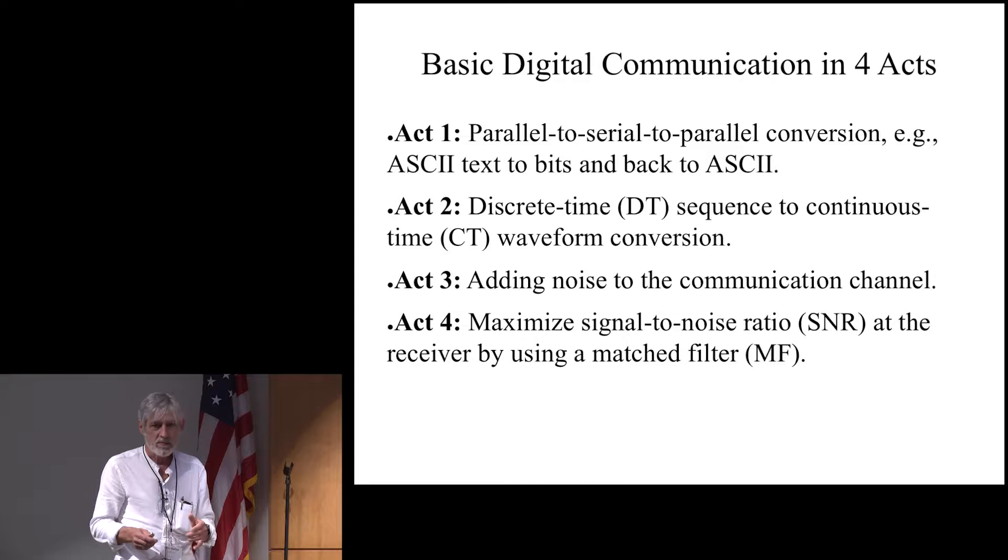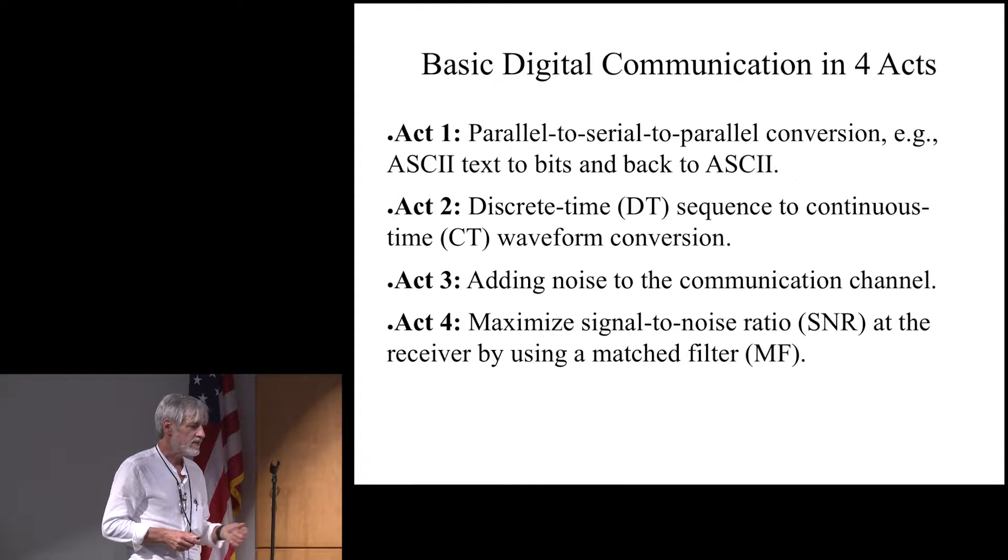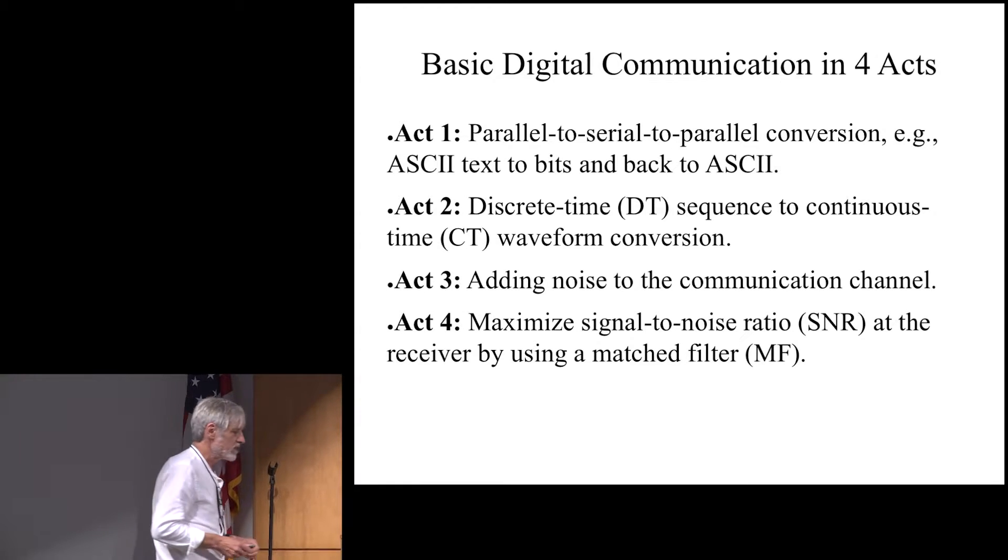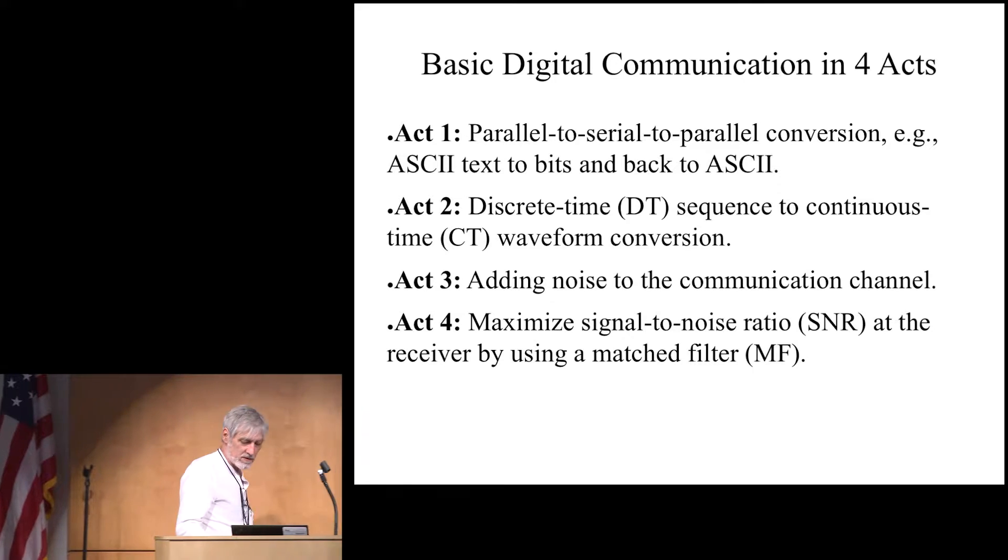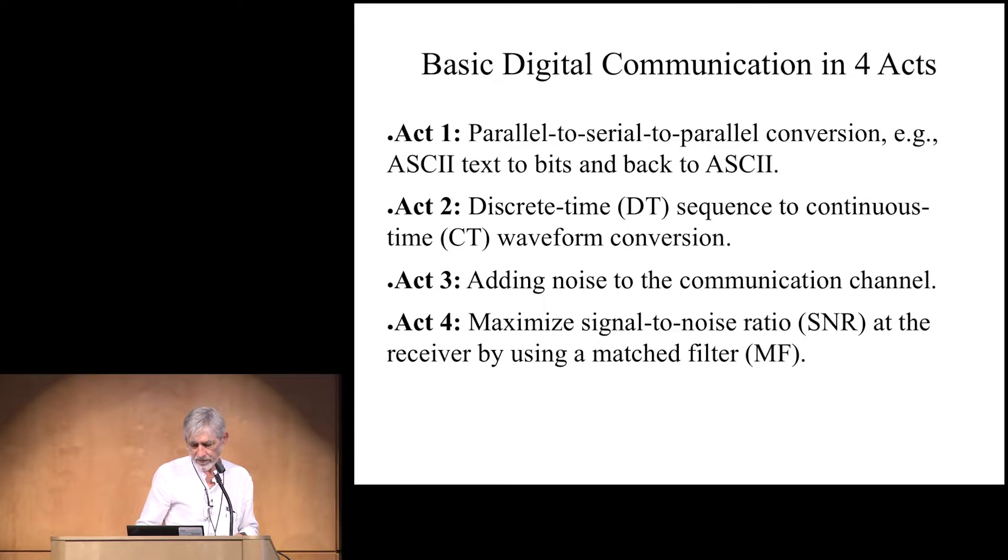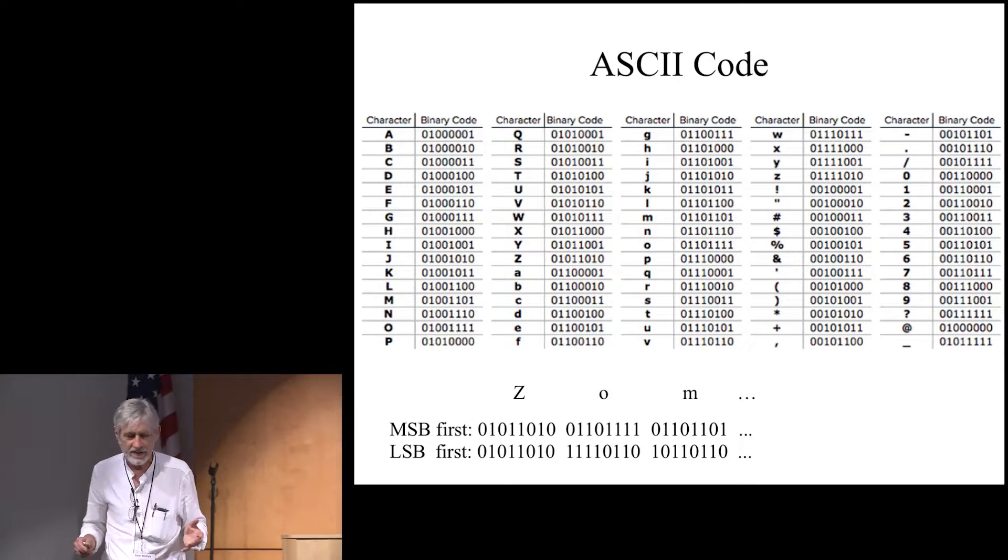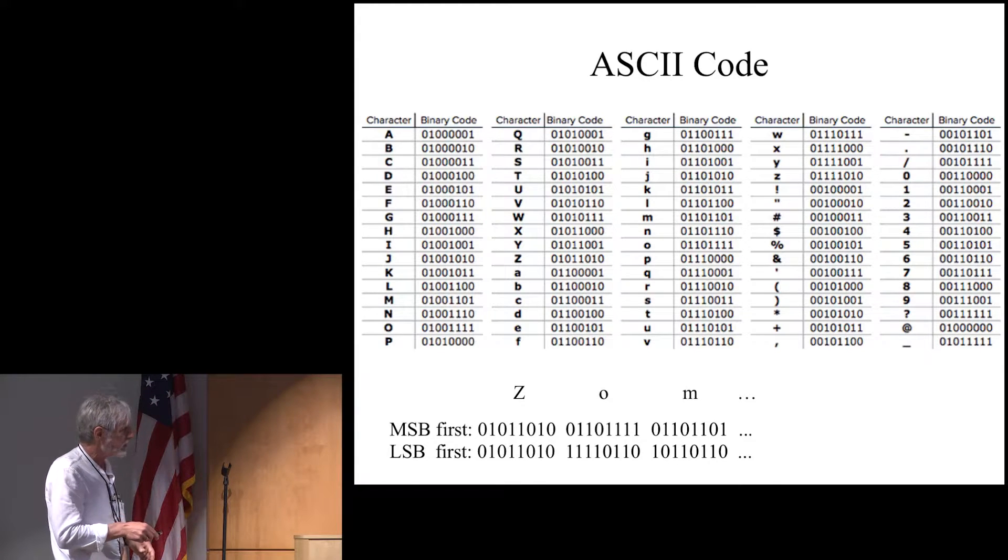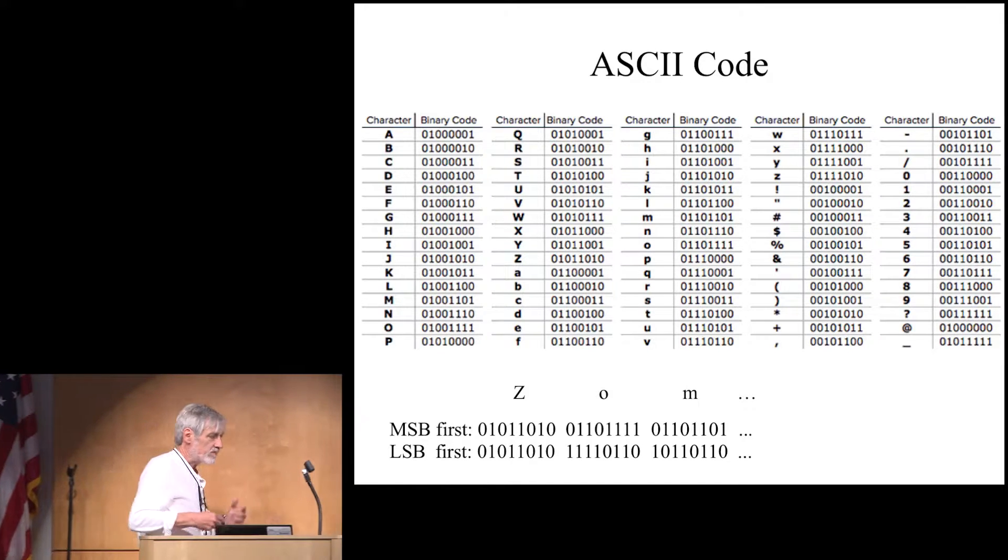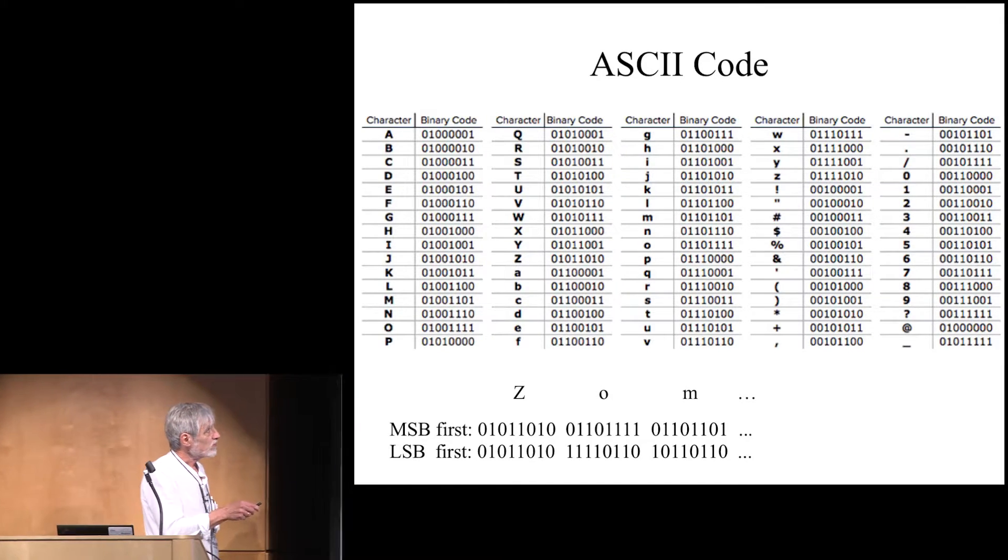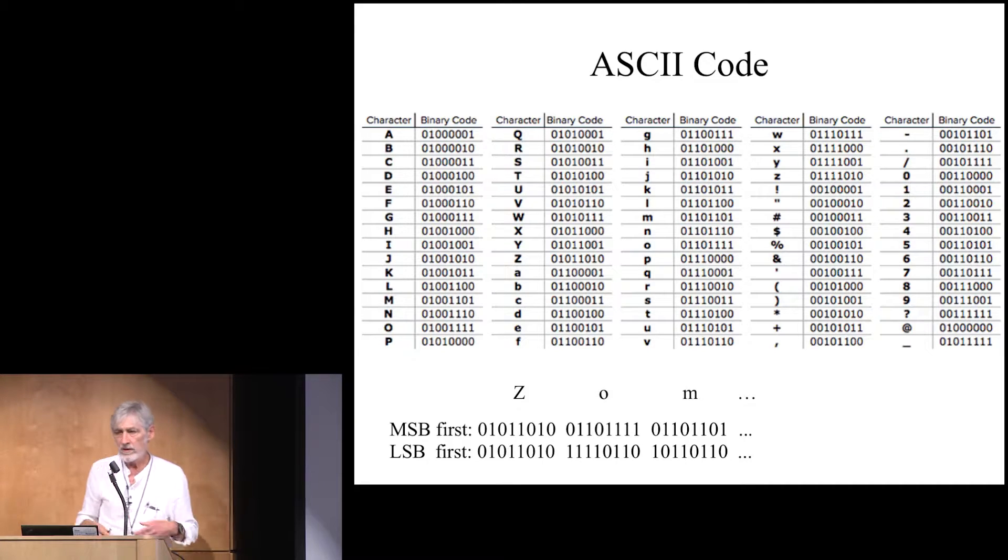And then you realize, oh, maybe I should ask some questions and I should sit down and actually solve some formulas so that I get better performance for my communication system. So most of you probably have heard or seen the ASCII code. It's a way of taking alphabetic characters and making them into eight bits. And we want to take those individual bits basically and transmit those. So we need to do a parallel to serial conversion. So that's the first thing that we do.